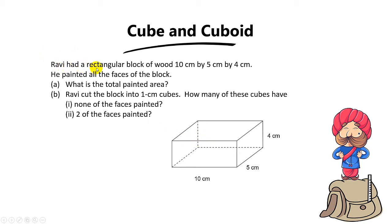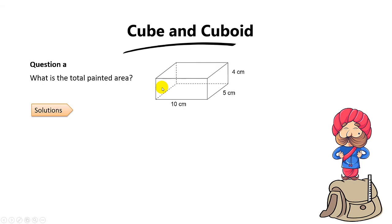Ravi had a rectangular block of wood that is 10cm by 5cm by 4cm. He painted all the faces of the block. For Part A, we want to find the total painted area. After you paint all the faces of the block, you basically just need to find the surface area of the whole cuboid.